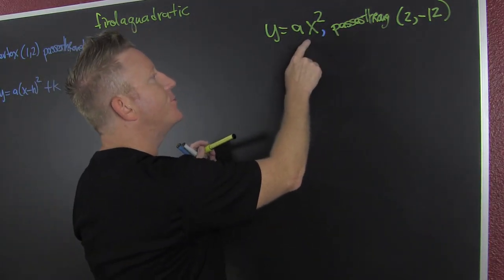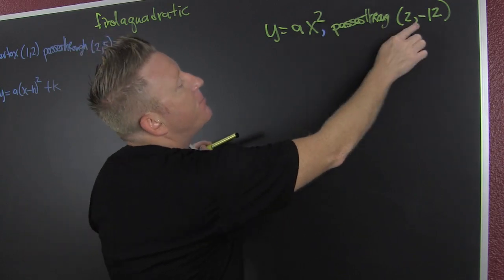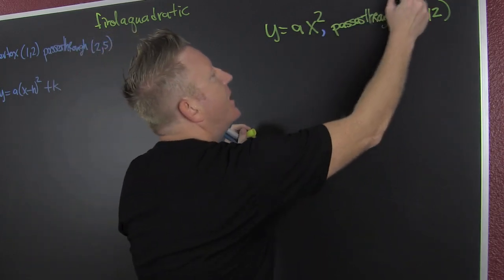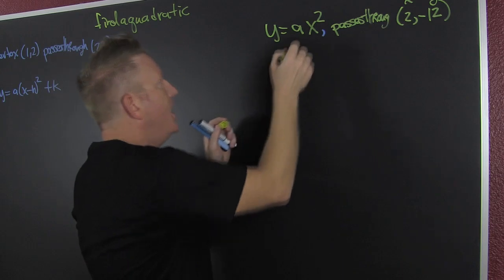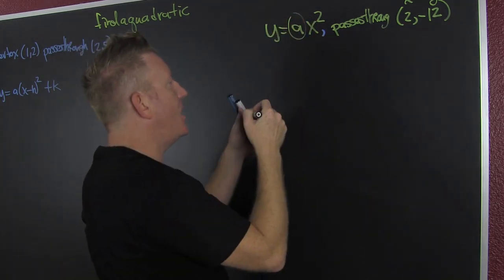Yeah, okay that's passing through the origin and it also passes through that. What's that? That's your X. That's your Y. That's why I'm gonna go and I'm gonna try to find that A.